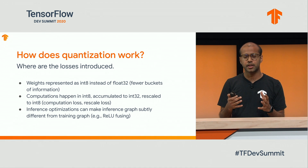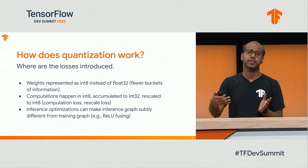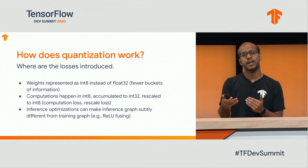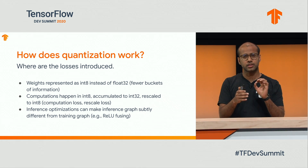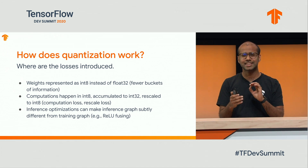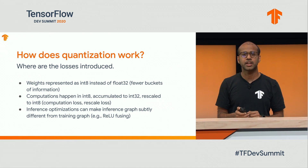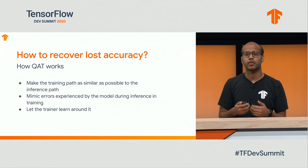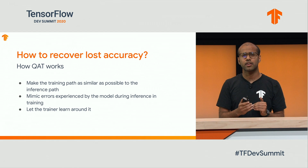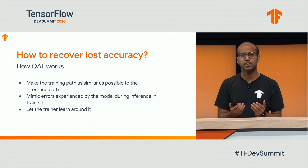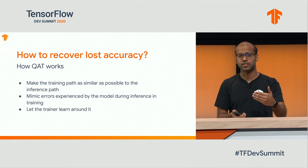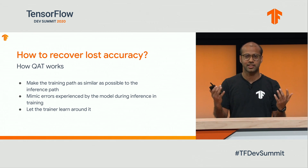Generally when we run quantized models during inference, there are various inference optimizations applied to the graph. Because of that, the training graph and the inference graph can be subtly different, which can potentially introduce additional errors. To recover lost accuracy, we try to make the training graph as similar as possible to the inference graph, and we introduce the errors that actually happen during inference so the model learns around them — machine learning does its magic.